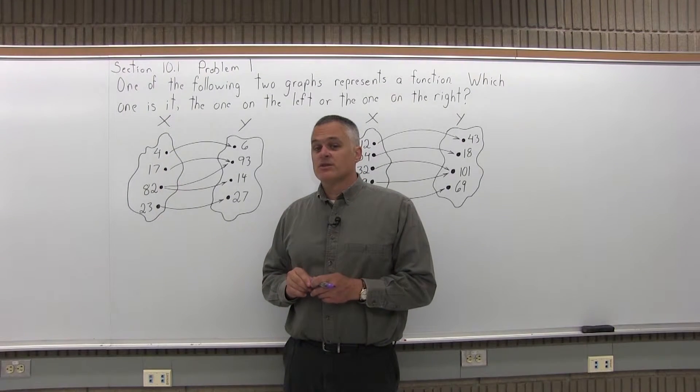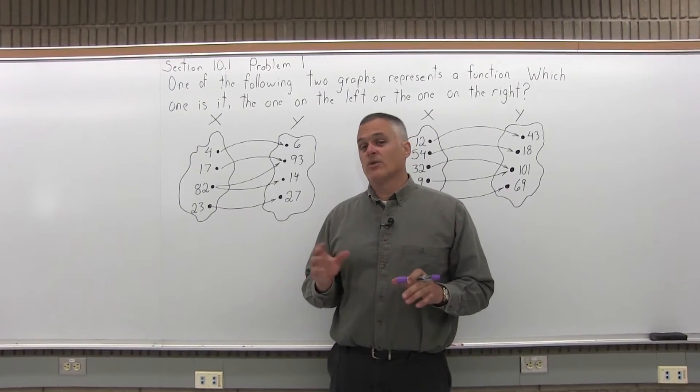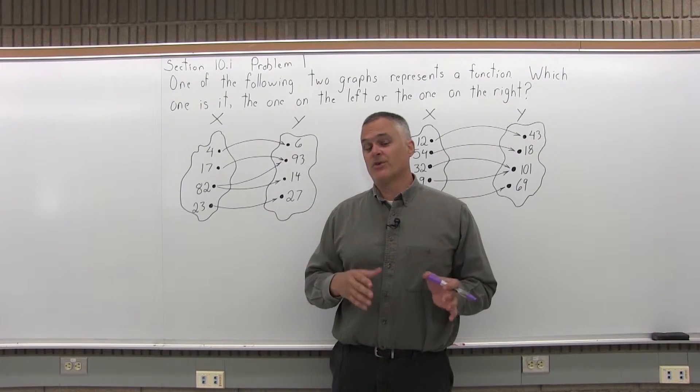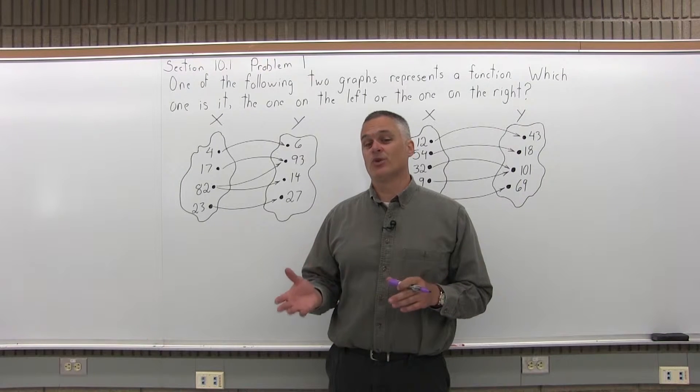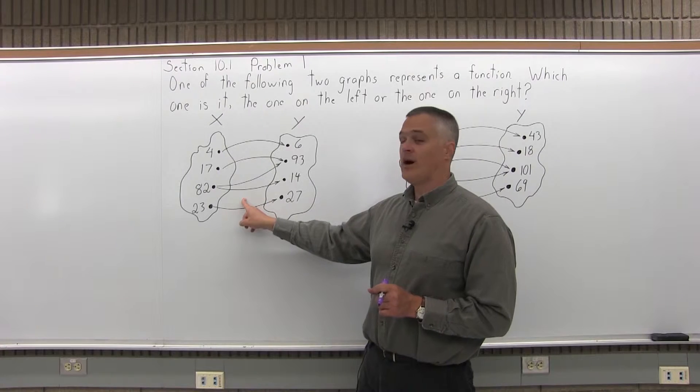For a function that relates mothers and daughters, the daughter has to be the input because the daughter will only have one mother. If you put the mother in as an input, some mothers have more than one daughter.